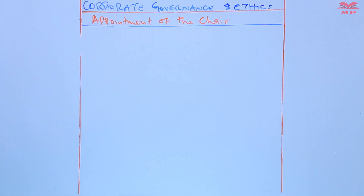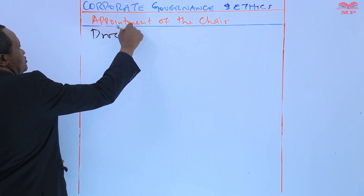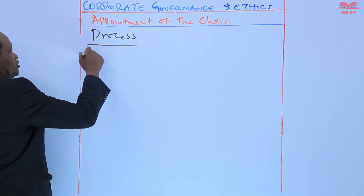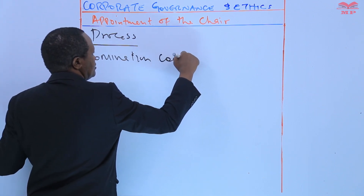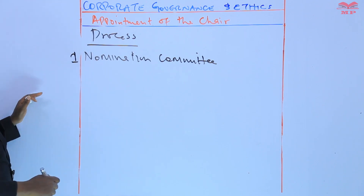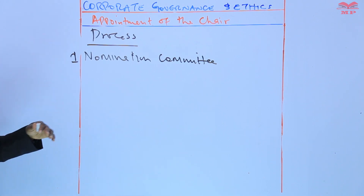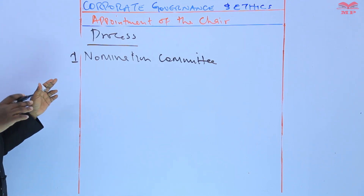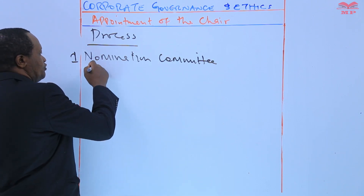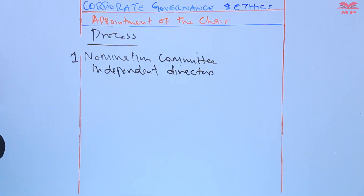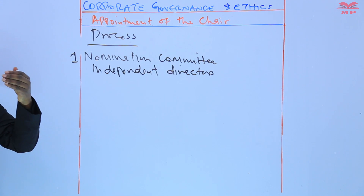So what is the process of appointment? In appointing the chair of the board of directors, the nomination committee plays a very key role. This appointment is done through the nomination committee. Typically, a nomination committee composed of independent directors is responsible for the identification and evaluation of potential candidates for the chair position.